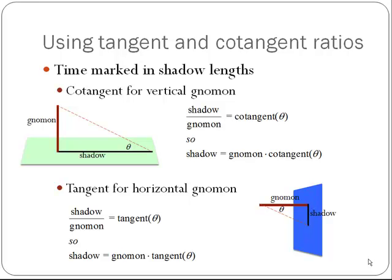Tangent and cotangent ratios were also used to measure time on a sundial. If we have a gnomon that is vertical sticking up out of the ground, the cotangent ratio was used because the length of the shadow divided by the length of the gnomon equals the cotangent — or the shadow equals the gnomon times the cotangent. If the gnomon was attached to a wall and therefore horizontal, the tangent function was used because the shadow length divided by the gnomon length equals the tangent of that angle, or the shadow equals the gnomon times the tangent.